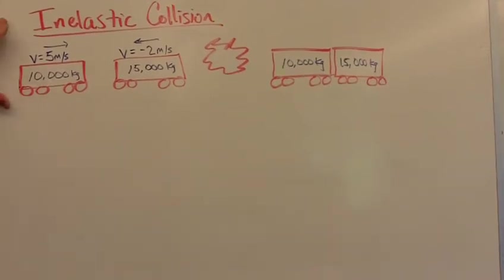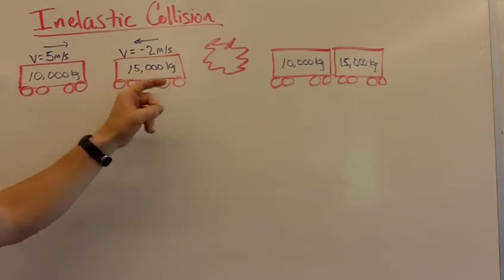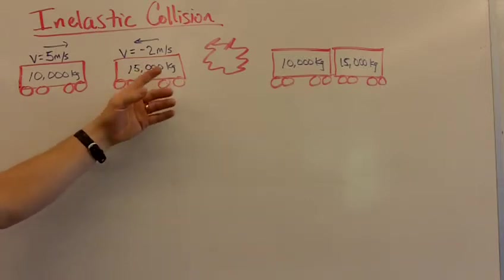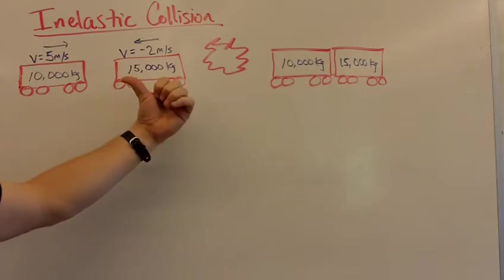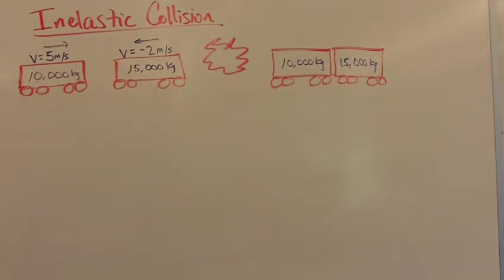All right, everyone's favorite inelastic collision. Here we have two train cars traveling toward each other. This one has a mass of 10,000 kilograms and a velocity of 5 meters per second in that direction. This train car has a mass of 15,000 kilograms, so it's a little bigger, and it has a velocity of 2 meters per second in the other direction.